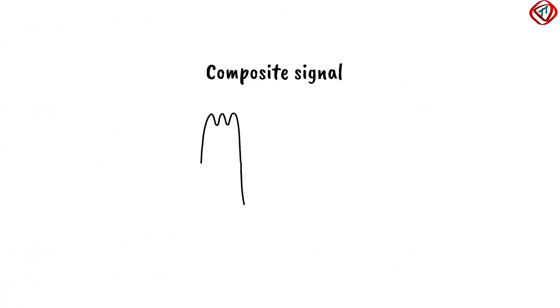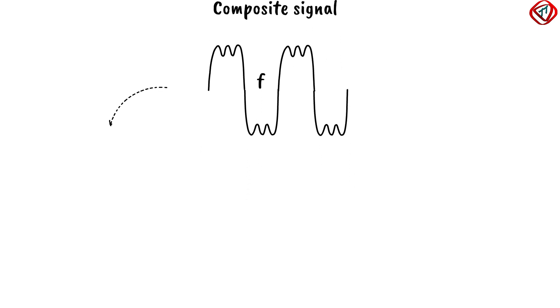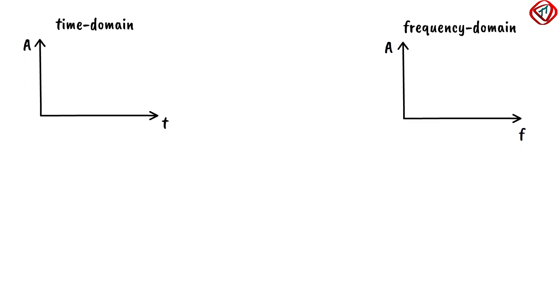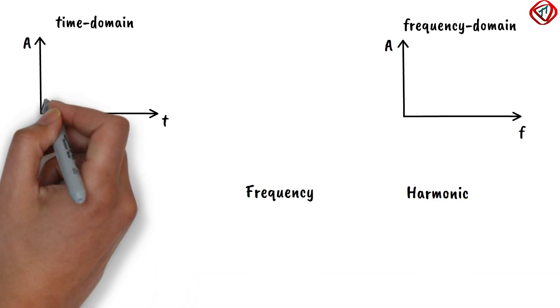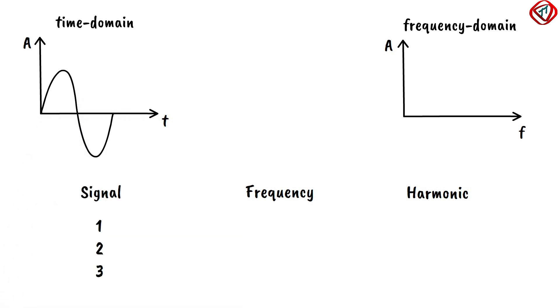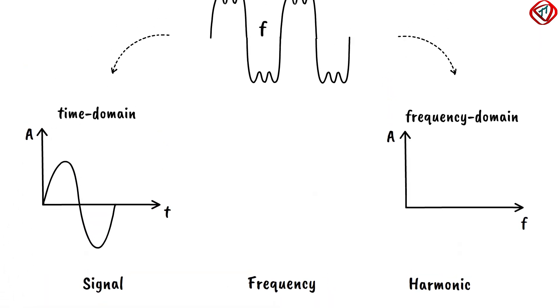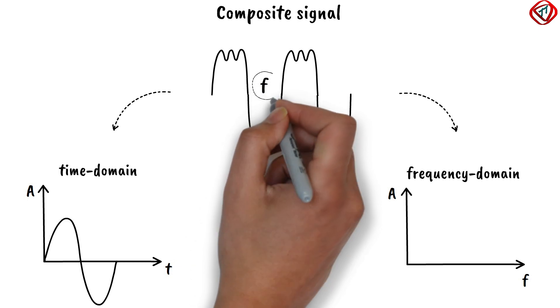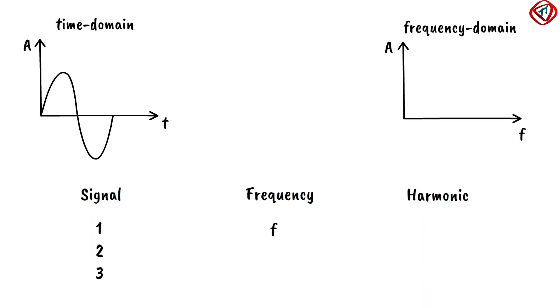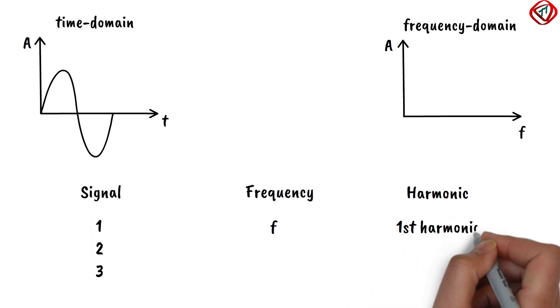Consider a composite signal with frequency f. Let us decompose it and represent it in the time domain and frequency domain. It results in three signals. The first signal has frequency f which is same as that of the composite signal. It is called the fundamental frequency or the first harmonic.